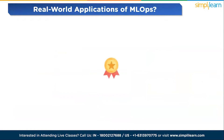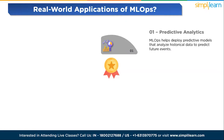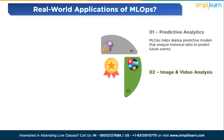MLOps finds application in various areas where machine learning models are deployed in real-world production environments. The first application is predictive analytics — MLOps helps deploy models that analyze historical data to predict future events. These models are used in finance, marketing, sales, and other industries to forecast trends and optimize decision-making.